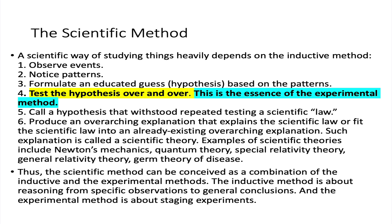A theory is not something that just pops into one's head — it's not merely an idea that has occurred to someone. A scientific theory is really the last and grandest step in the scientific method: it is the overarching explanation for a scientific law or for a network of related scientific laws. To sum it all up, the scientific method is really the combination of the inductive method and the experimental method.